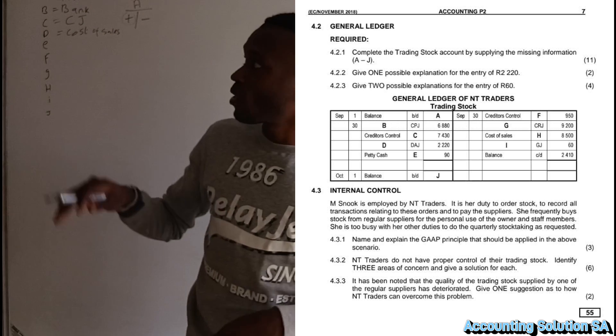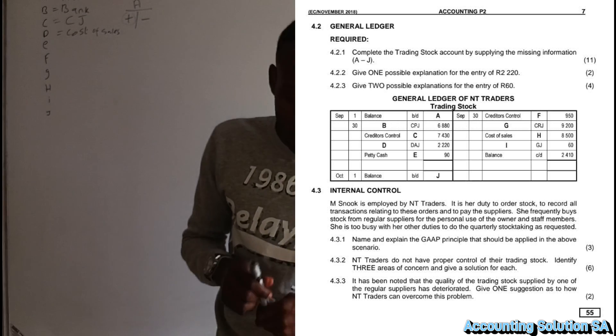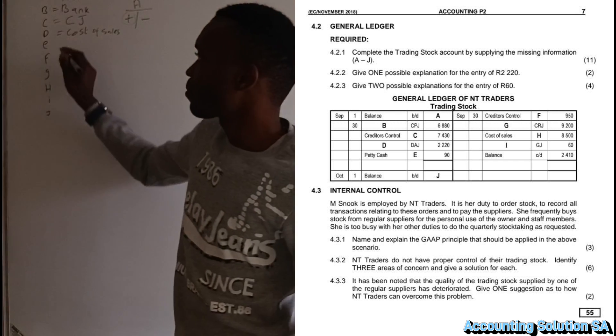So cost of sales is going to increase the account of inventory. Now let's proceed to the next one. The next one is number E, petty cash. Petty cash is number E, which means that petty cash must be recorded under petty cash journal, PCJ.